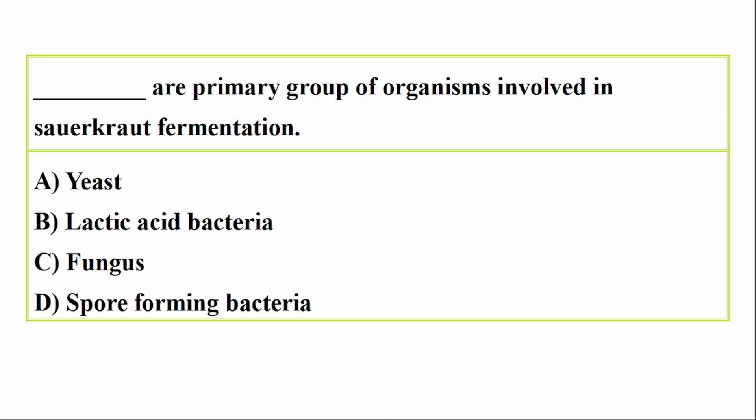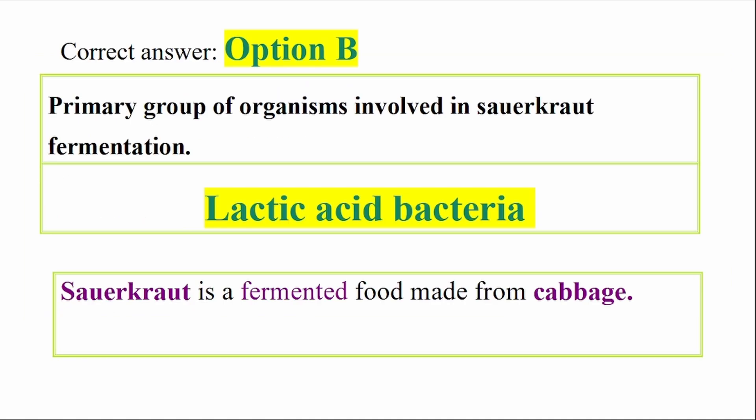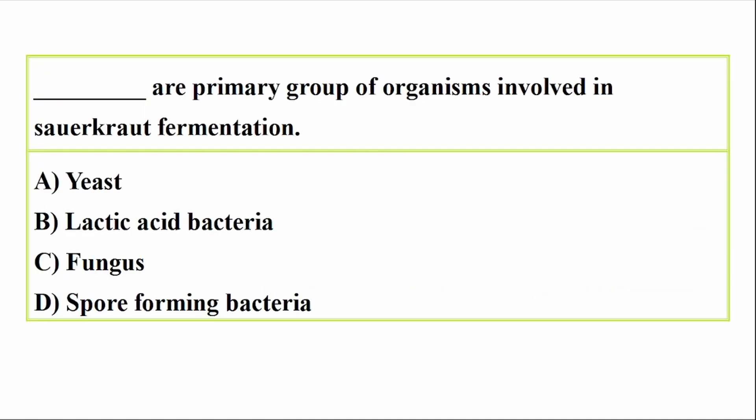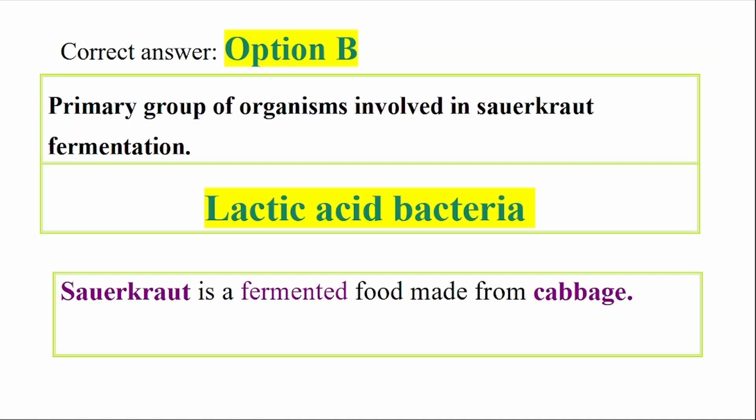Next question: What is the primary group of organisms involved in sauerkraut fermentation? Options include lactic acid bacteria, and fungus-forming bacteria. Correct answer: option B, lactic acid bacteria. Sauerkraut is a fermented food made from cabbage.